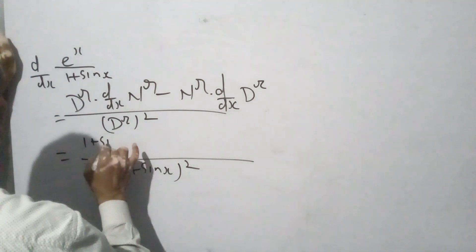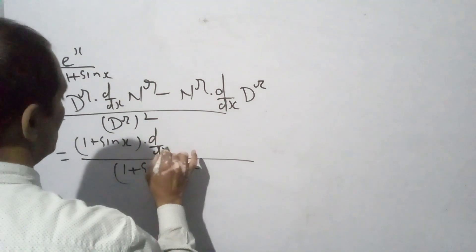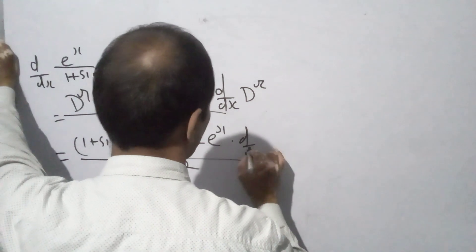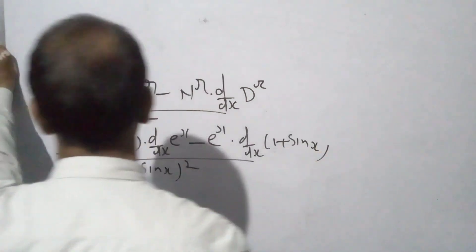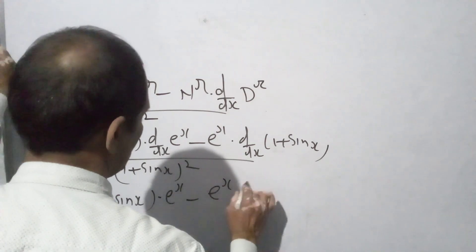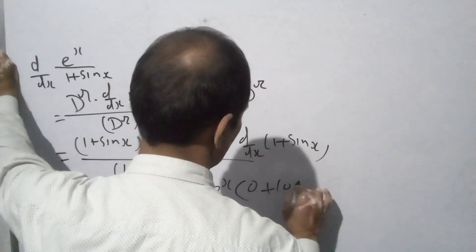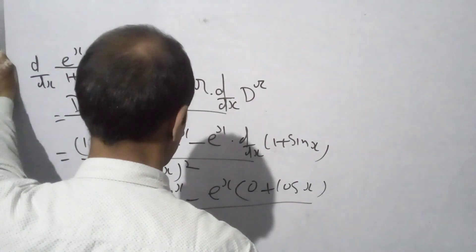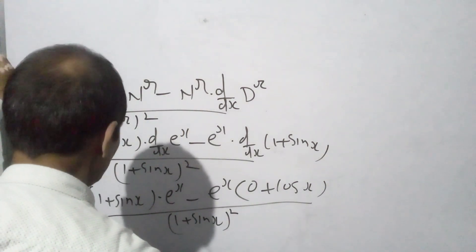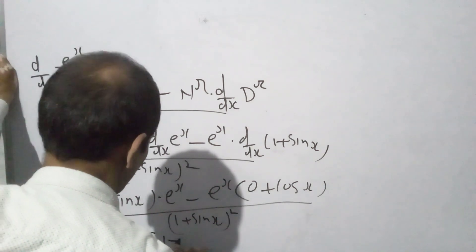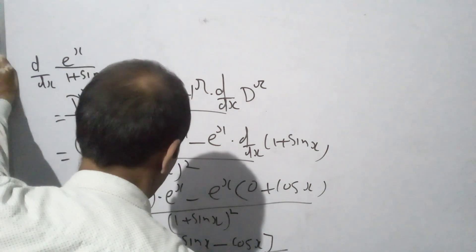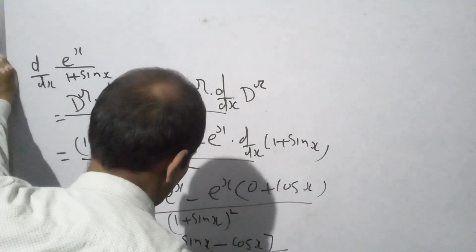1 plus sin x into the differentiation of the numerator, over 1 plus sin x whole square. Look here — 1 plus sin x whole square in the denominator, with 1 plus sin x terms in the numerator.